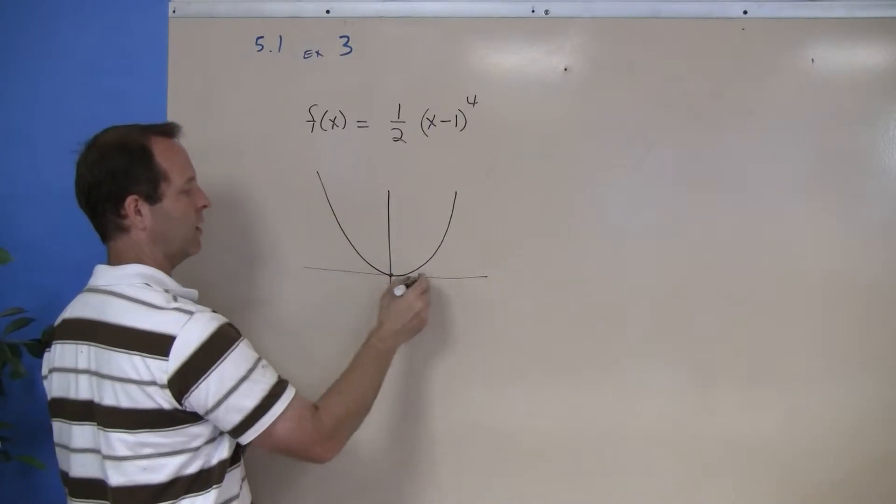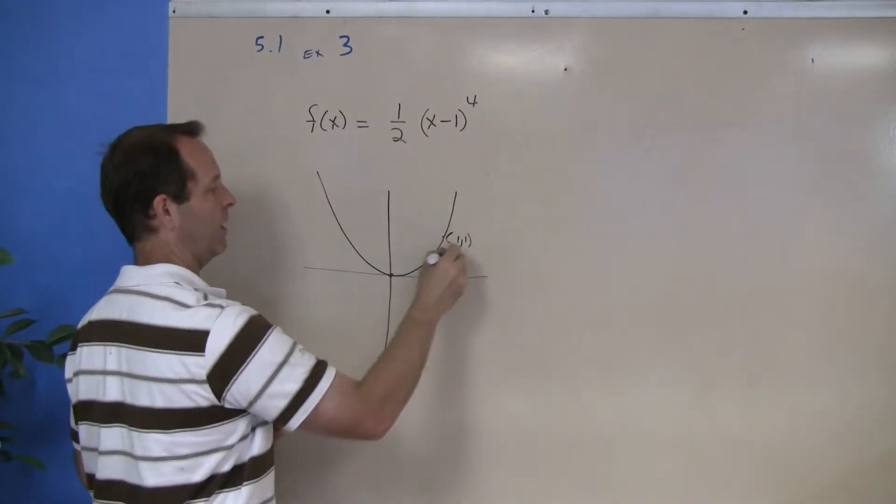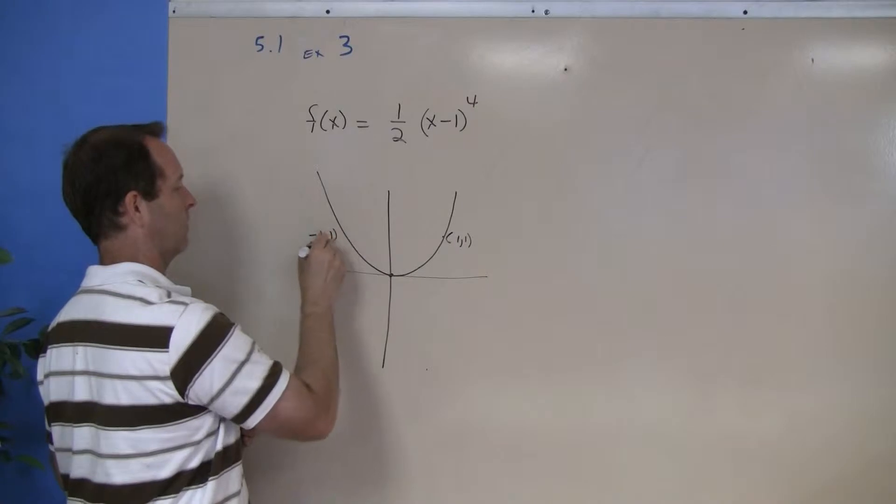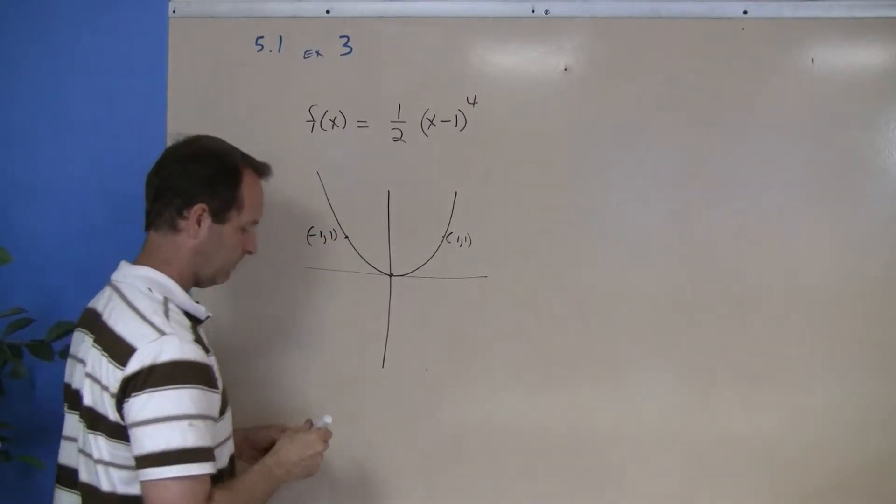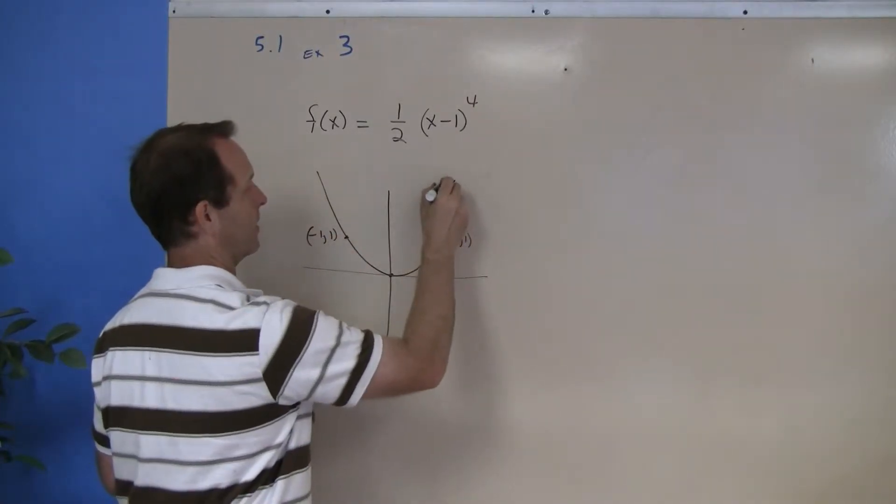It goes through the point (0, 0). This one also goes to the point (1, 1) and (-1, 1). And I'll write that as x to the fourth.